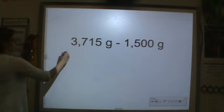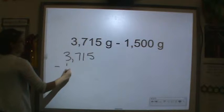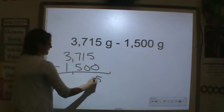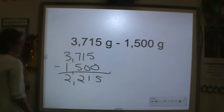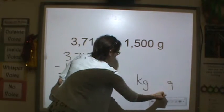Now let's do some subtraction. 3,715 minus 1,500. This is pretty easy peasy. But now what we're going to do is we're going to convert this into kilograms and grams.